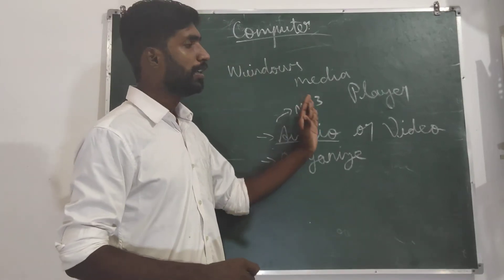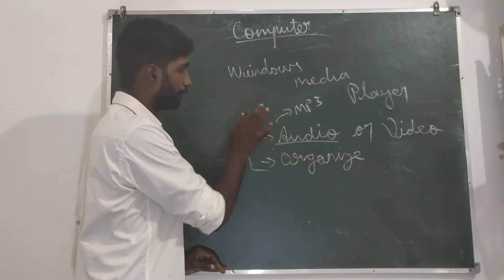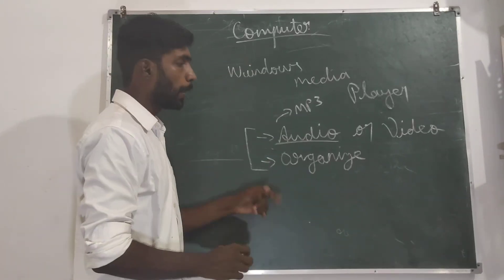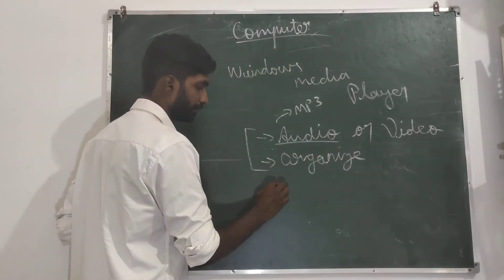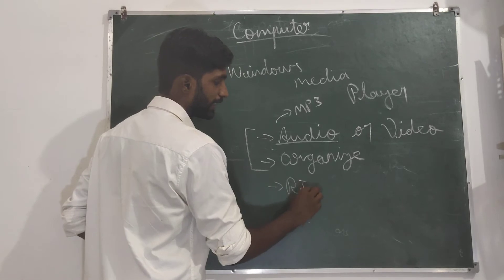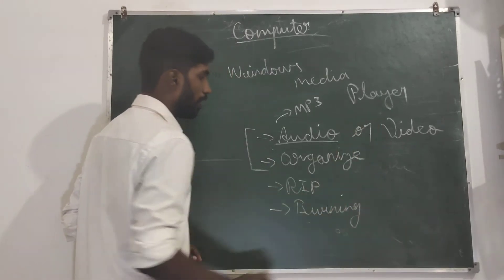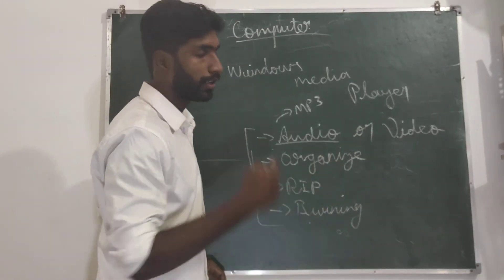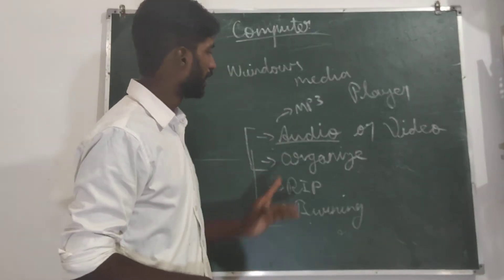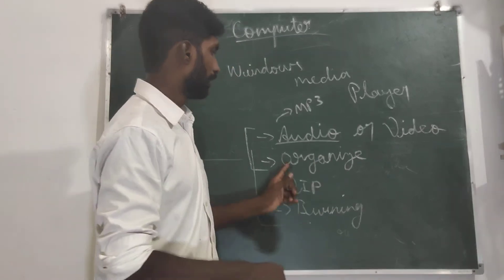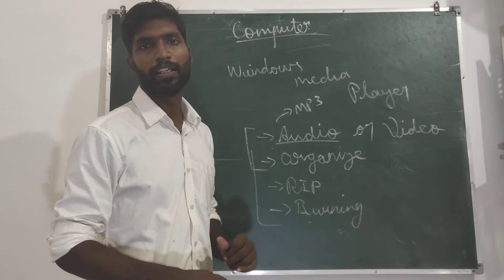You should know Windows Media Player. Students, this is the main things we are going to do in Windows Media Player. Out of this, we can able to do two more things. That is called rip and burning. Only these four things are very important in this Windows Media Player. Playing audio video you understood. Organize, organizing a particular sequence. What is rip, what is burning?